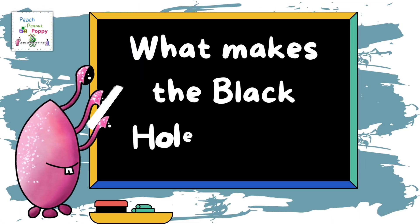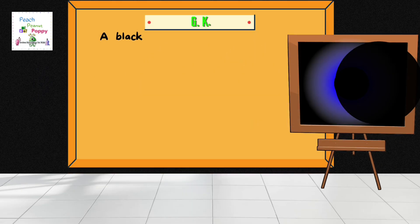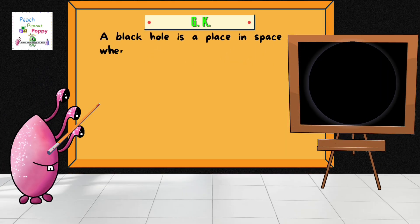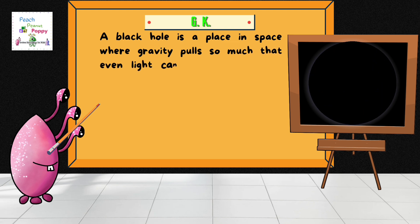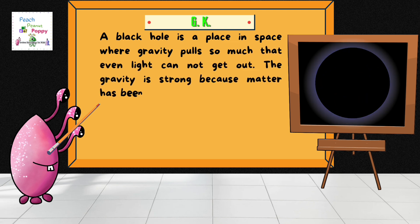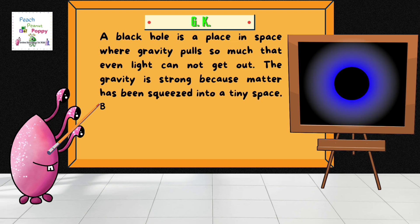Do you know what makes a black hole black? A black hole is a place in space where gravity pulls so much that even light cannot get out. The gravity is strong because matter has been squeezed into a tiny space. Because no light can get out, people can see black holes. This can happen when a star is dying.